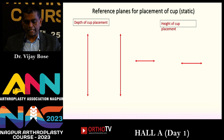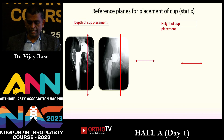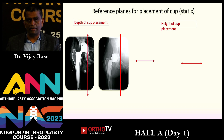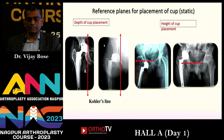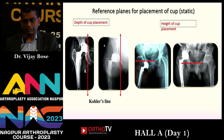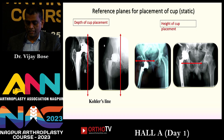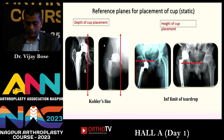For the static parameters, the reference plane for depth of cup placement is the Kohler's line — you can place a cup inadvertently very medially or very laterally based on that. The height of cup placement references the inferior edge of the teardrop — you can place it very low or very high. The inferior limit of the teardrop is your reference point.